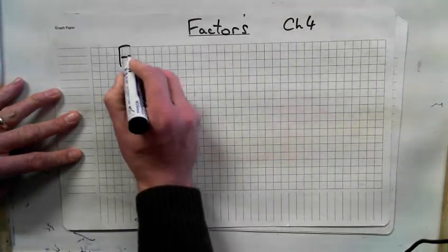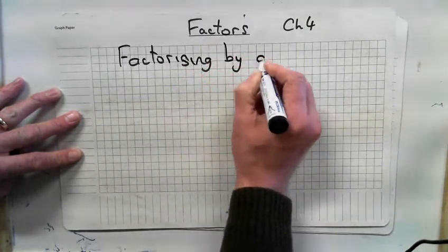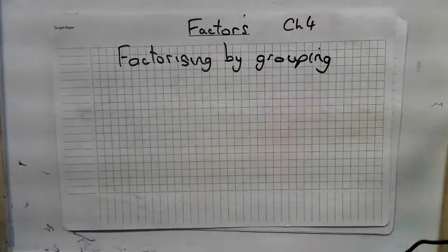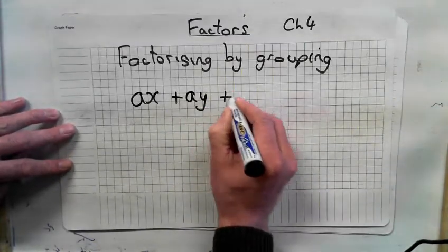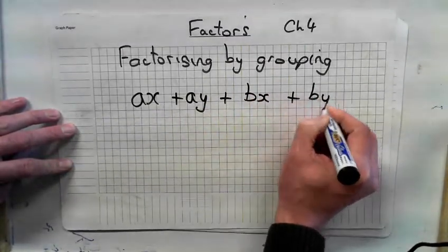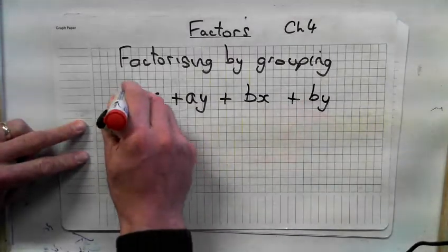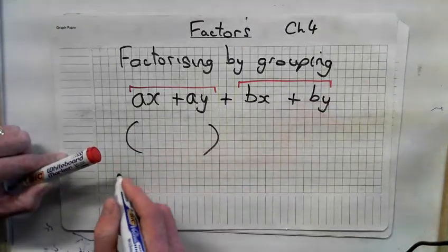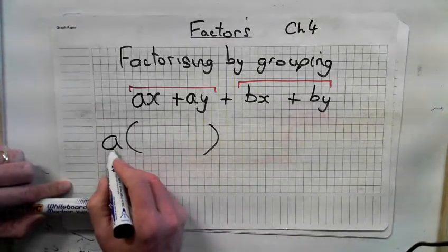And then we did factorizing by grouping. So we'll take an example of that. For example, we had ax plus ay plus bx plus by. What did we group? We grouped the first two, didn't we? We grouped the second two. What's common? What's common to both of these? A. And what do I multiply? X plus y.